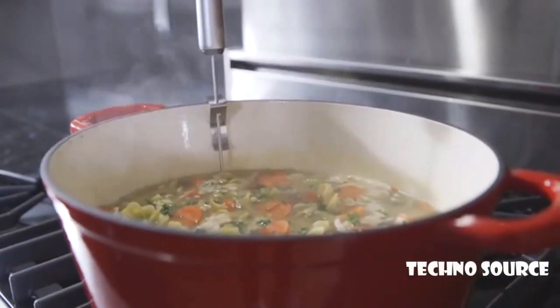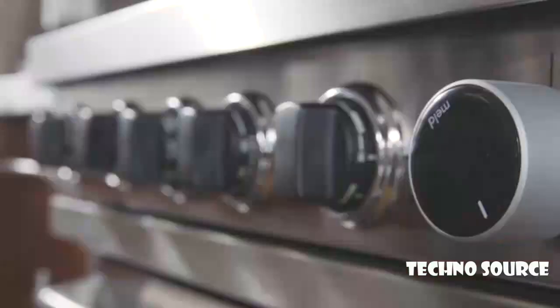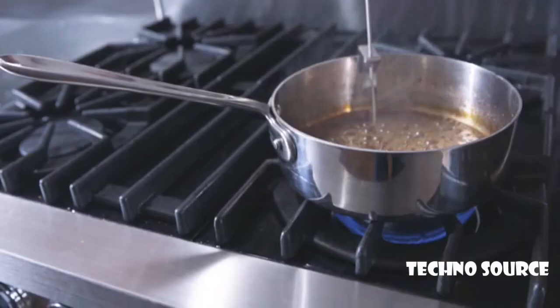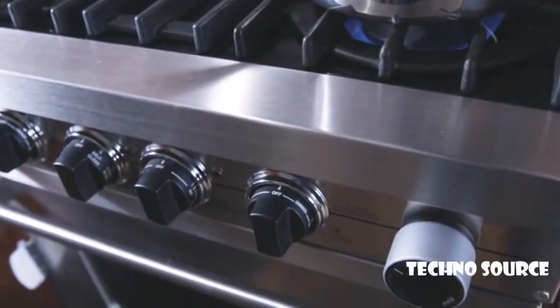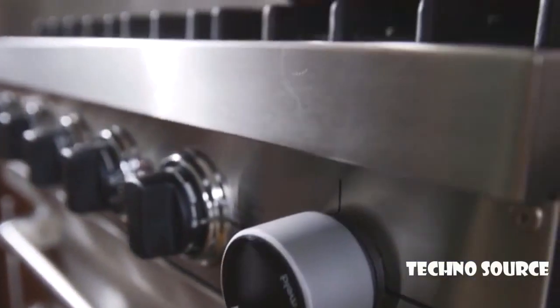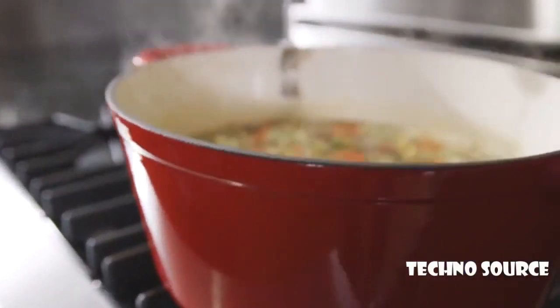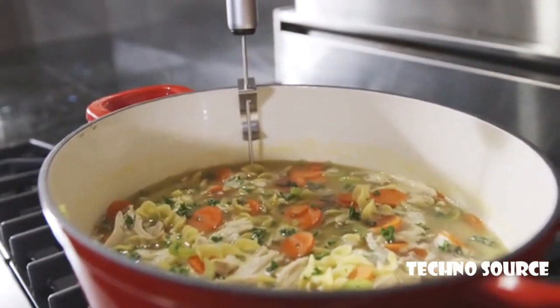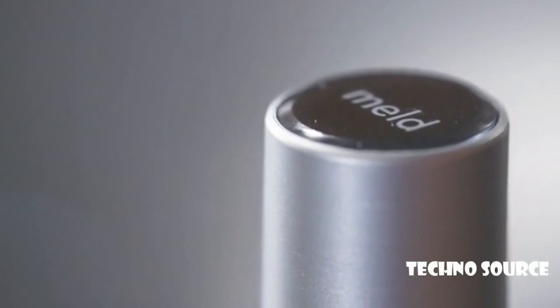Meld reacts so quickly that as soon as you add cold food to a pot, it knows to turn up the heat to maintain temperature, and it knows exactly when to turn it down so nothing overcooks. Meld controls the temperature while you control the flavor, and meals come out perfectly each time.